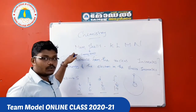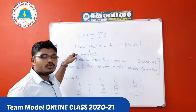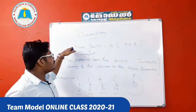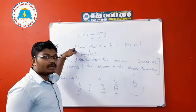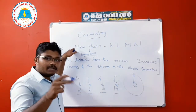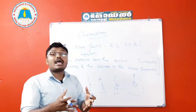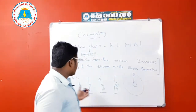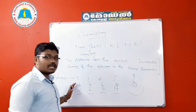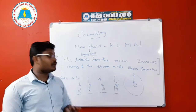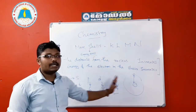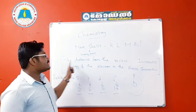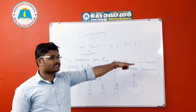The main shell is the energy level. We find that the main shell represents the volume of electrons, and the actual position of the electron is described by the sub-shell. That is why we have the sub-shell — there are 4 sub-shells. The distance from the nucleus increases, and the energy level of electrons increases.